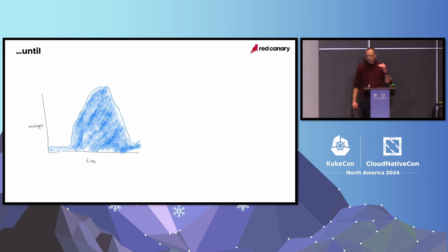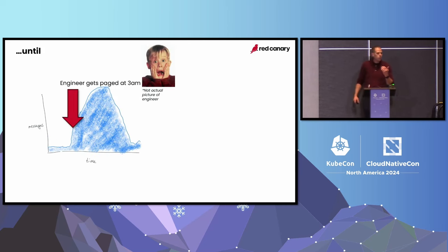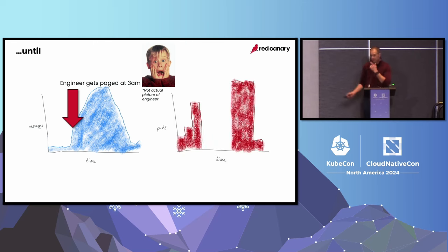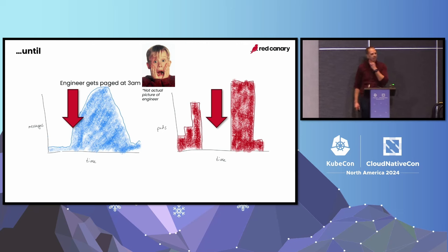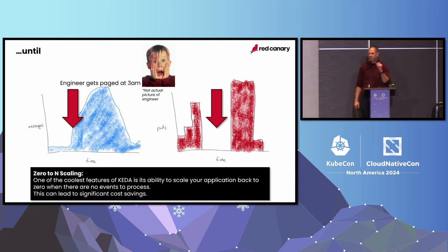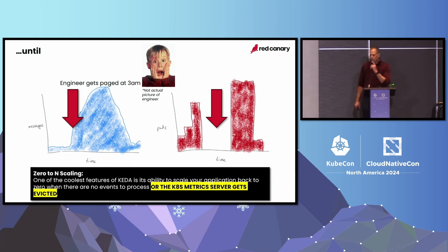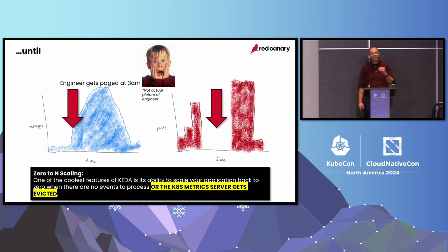But remember that trough of despair? The problem was that at around 3 in the morning, we had a pile of messages in our system. You don't normally have that at 3am, so our engineer got paged. Looking at it, you ask why did all those messages get piled up? Well, there's a big clue when we had no pods. This was an interesting discovery, because we had a new autoscaler — why wouldn't we have pods? I had to make a little amendment to that quote: KEDA can scale to zero when you have no messages, or if the KEDA metric server gets evicted from your cluster. I'm sure this was in the documentation, and there are about three lines of YAML to solve this problem, but it was a really interesting discovery at 3 in the morning.